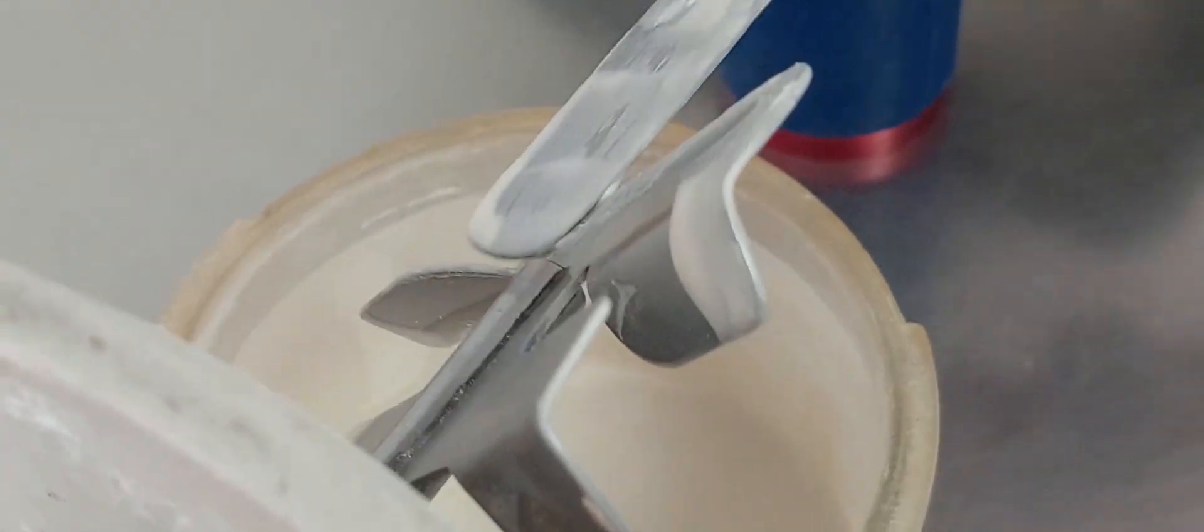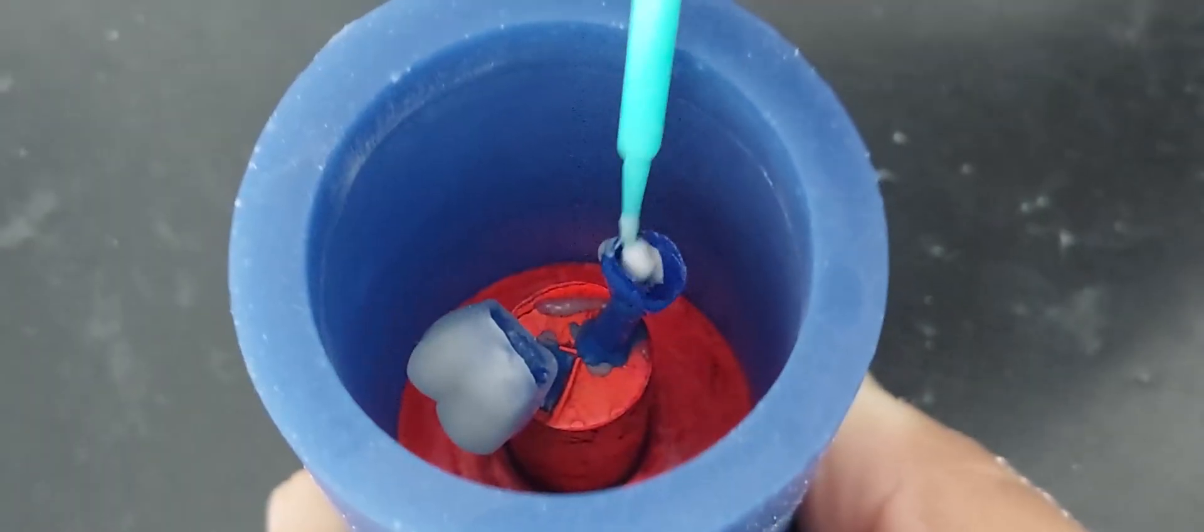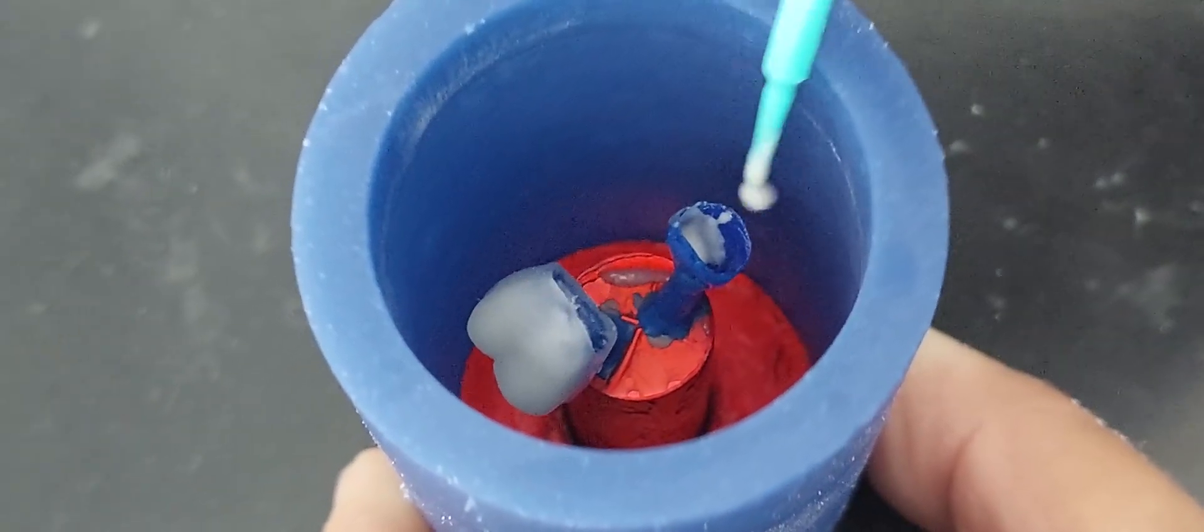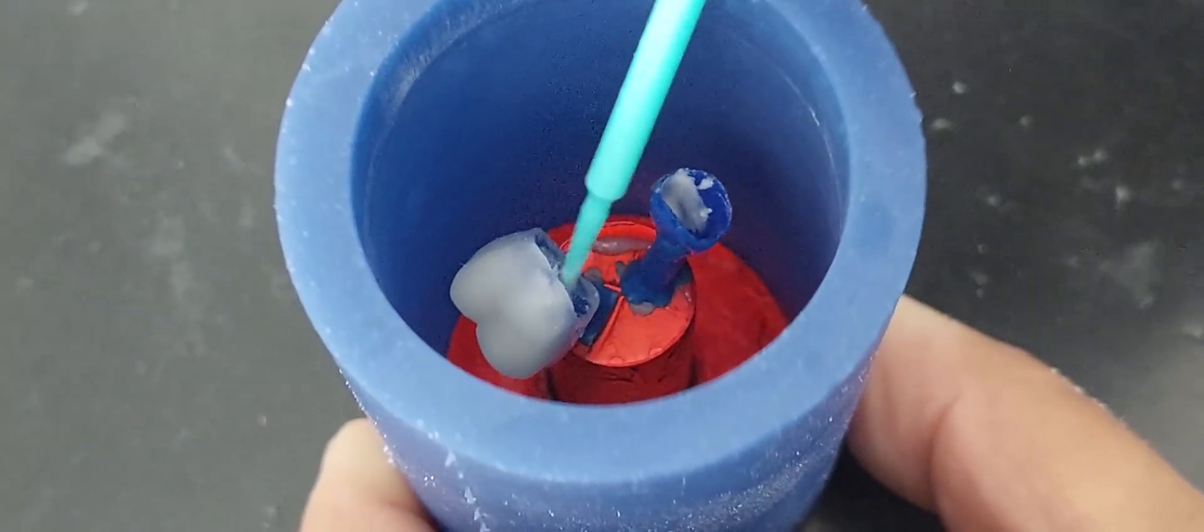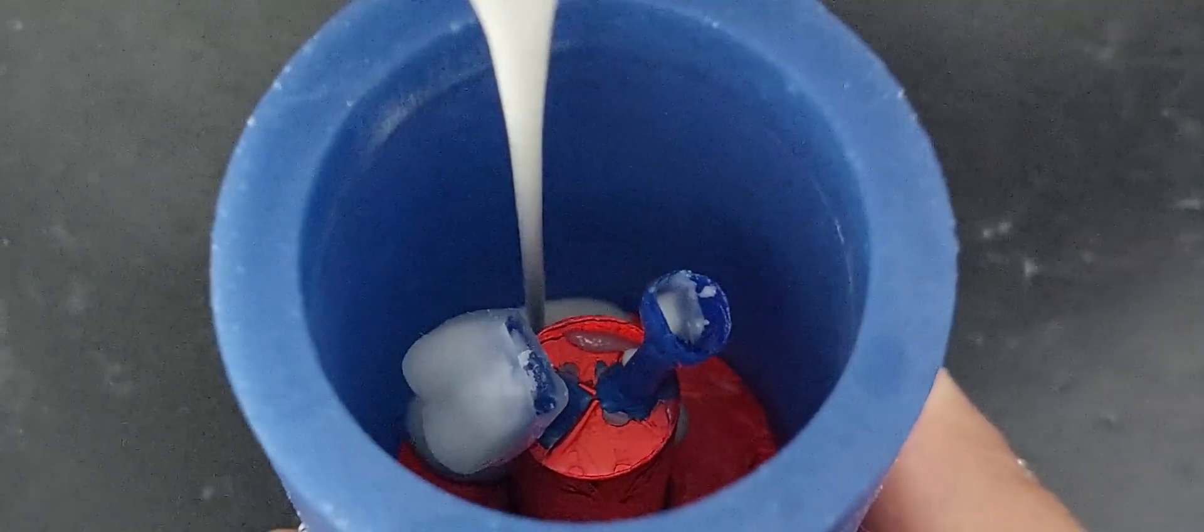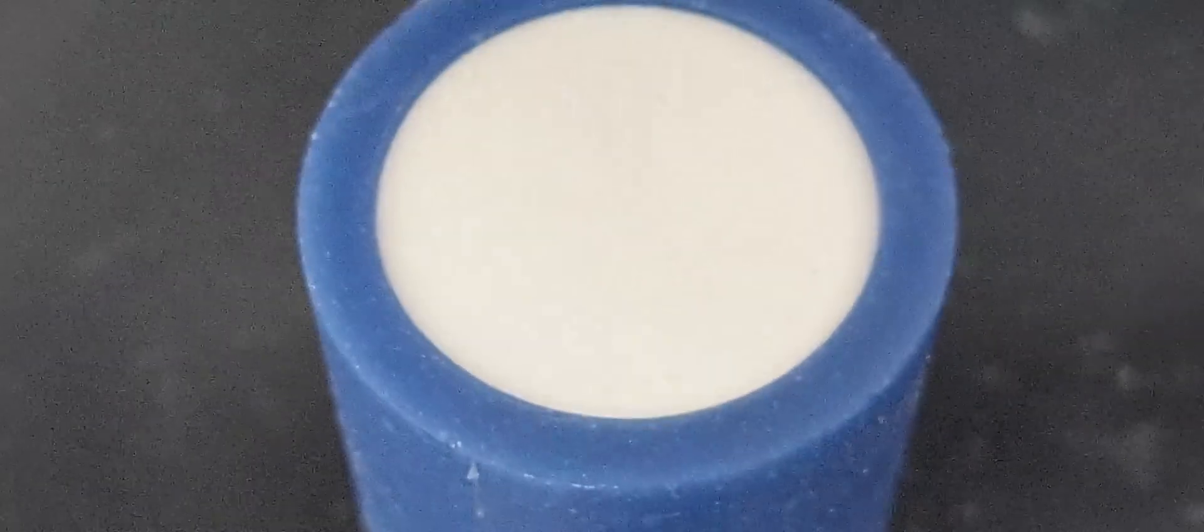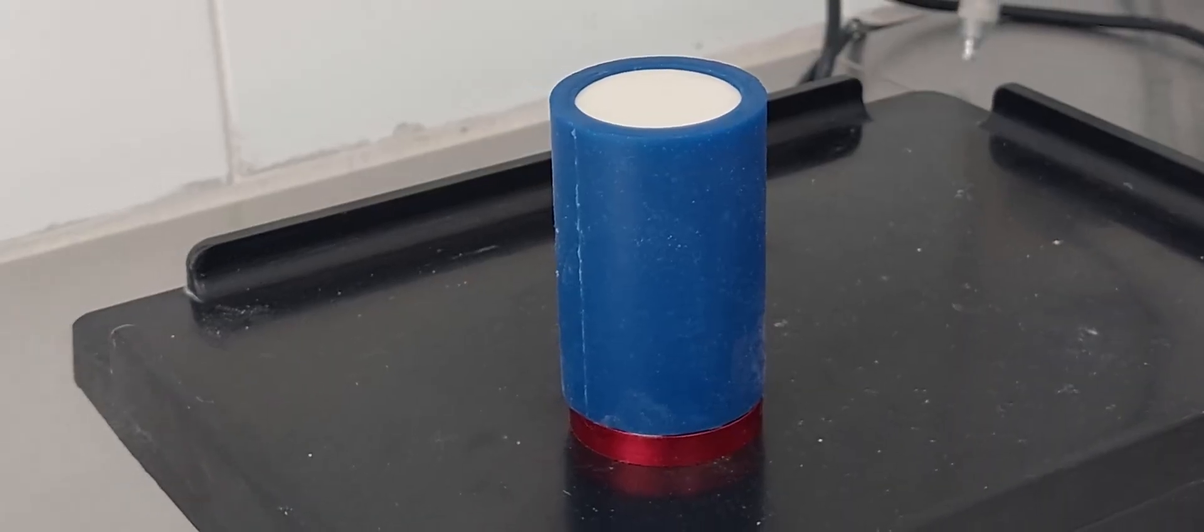When you have done this procedure, carefully add some of the investment to the interior parts of your crowns and copings to avoid any bubble formation. Then, pour the rest of your investment mixture into the cylinder at a 45 degree angle.